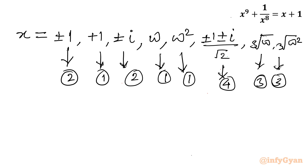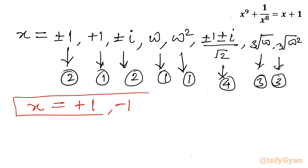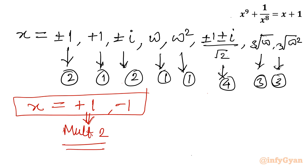Only 3 solutions are real: x = +1 (with multiplicity 2) and x = -1. I hope this video is meaningful to you — we solved this without using Euler's identity, relying only on fundamental complex number properties. Don't forget to like, share and subscribe. Bye bye till next video, good luck and take care of yourself.